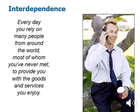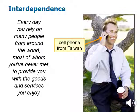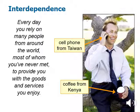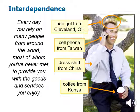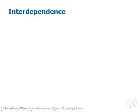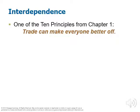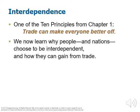When you think about it, every day you rely on many people from all around the world, most of whom you will never meet. These global supply chains provide you with the goods and services that constitute your standard of living. It's a whole interdependent network of production and distribution that brings all the goods and services that we enjoy to our doorstep. One of our 10 principles of economics was that trade can make everyone better off. We're now going to learn why people and nations choose to be interdependent and how they can gain from trade.